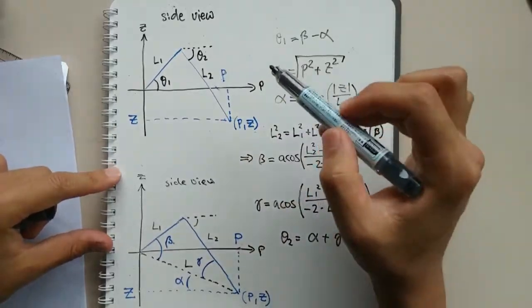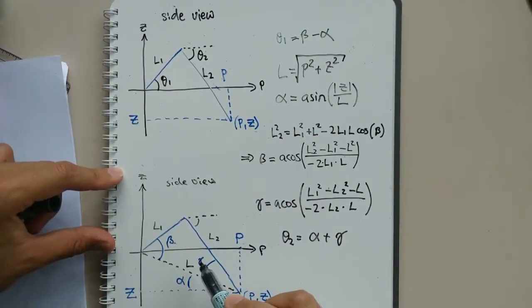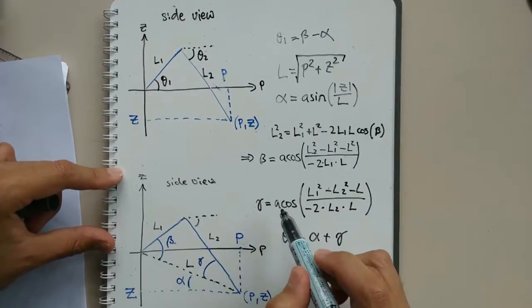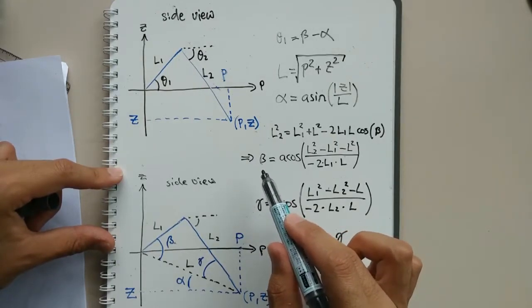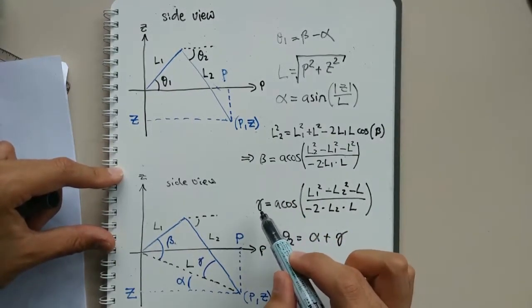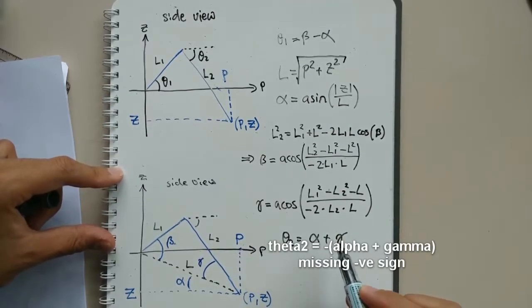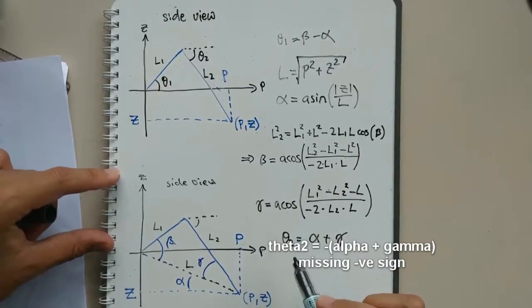To find the final output theta 2, we start by finding angle gamma using a similar method to that we used to find angle beta. Once we've found angle gamma, we add alpha and gamma together to find theta 2.